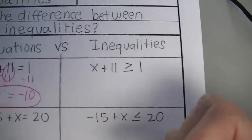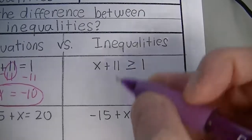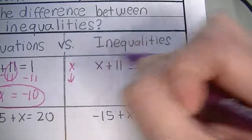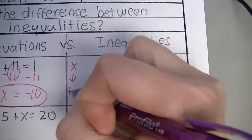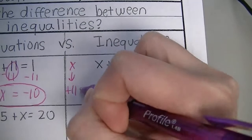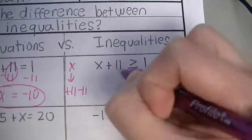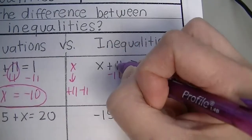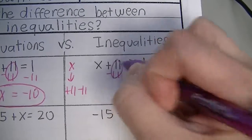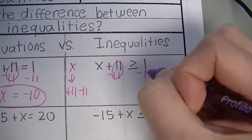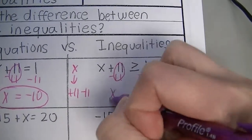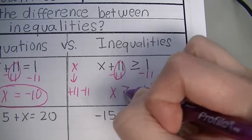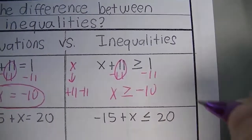Over here there's an inequality. You need to solve it the exact same way. Start with x, then we added 11. The inverse operation of adding 11 is subtracting 11. Do that to both sides. 11 take away 11 is 0. 1 take away 11 is negative 10. Bring down your x and bring down that inequality sign.